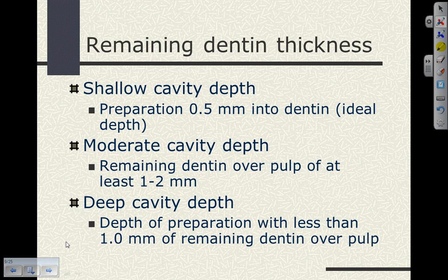We define cavity preparation based upon the remaining dentin thickness. A shallow cavity preparation is a preparation just barely into dentin — what we'll refer to as an ideal depth — half a millimeter into dentin. For posterior composite restorations, we can leave some enamel on pulpal walls, but typically for amalgam we're going to be half a millimeter into dentin. That's a shallow cavity preparation — that's ideal depth.